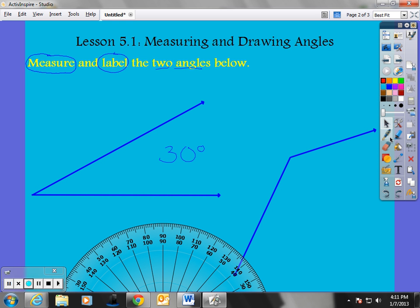Labeling it, I could choose any three letters I'd like. So, for this, I'm going to choose angle M, which is one point. A, which is where the vertex is formed. And we'll just call it N. Angle MAN.